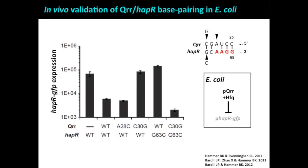A mutation right in the predicted pairing region, which was predicted to be catastrophic for the interaction computationally, screws up repression — it's as if no small RNA is present at all. We can make the corresponding mutation just on the HapR side: no repression. And importantly, when we put both mutations together — the gold standard for small RNA interactions in E. coli — we restore the interaction. We effectively replaced a C-G pair with a G-C pair. Remember this pattern: it looks like a frown — when pairing is productive, then you lose it, and then you get it again.